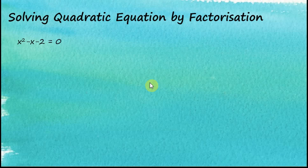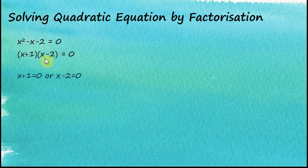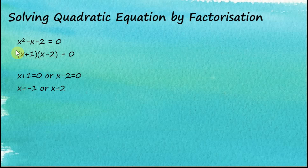Let's see this example. We have a quadratic equation. If we factorize it into factors form, we can solve it easily because we know that if the product of two numbers, terms, or expressions is equal to zero, then one of them must equal zero. So for this case, either x plus one equals zero or x minus two equals zero, giving x equals negative one or x equals two. That's how we solve quadratic equations by factorization. The question is: how do we factorize a quadratic equation into factors form? That's what we'll discuss in this video.